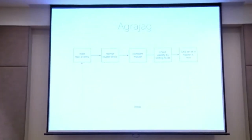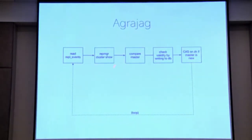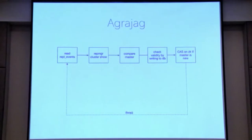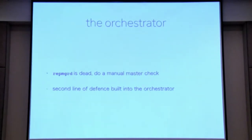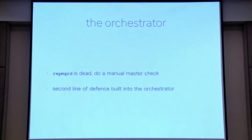The run loop does a compare-and-swap on ZooKeeper — if the master we're trying to write is newer than what's already there, we update it; otherwise we keep looping. This also allows you to build more lines of defense as a separate service — you can keep adding them as you identify threats. If RepManagerD is dead, you can do a failsafe scenario to check the databases directly, and you can build other kinds of defenses as well.